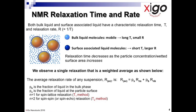In part one, we defined two liquid domains: liquid on the surface of a particle and bulk liquid far away from the particle surface. The liquid molecules far away from the particle, shown as light blue, are much more mobile and relax slowly, on the order of two to three seconds — the relaxation time T is long and so the rate R, the reciprocal, is small. However, liquid molecules on the particle surface, shown in dark blue, are restricted and relax more quickly, on the order of only 0.5 to two milliseconds, resulting in a much shorter relaxation time and a larger relaxation rate R.